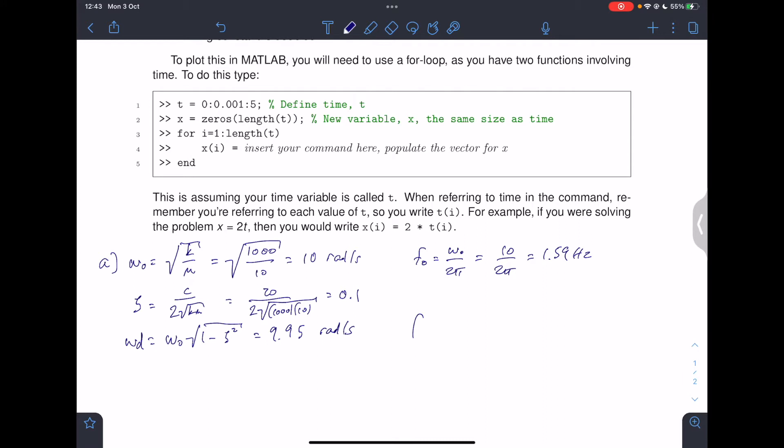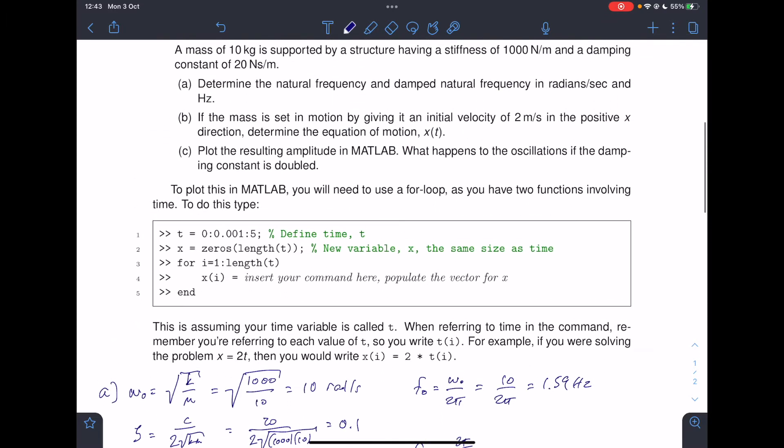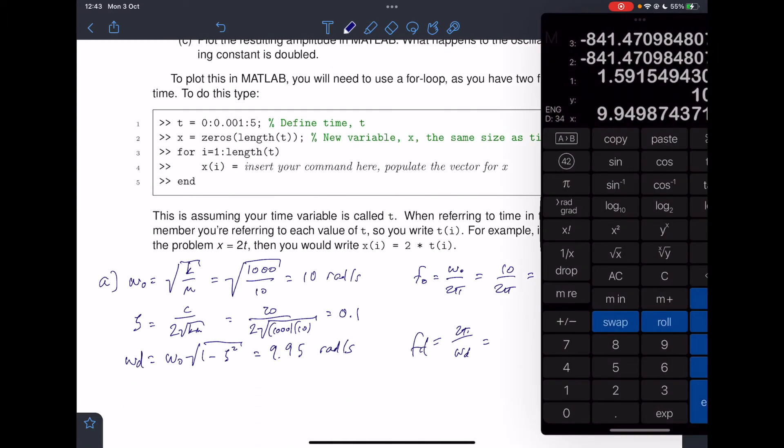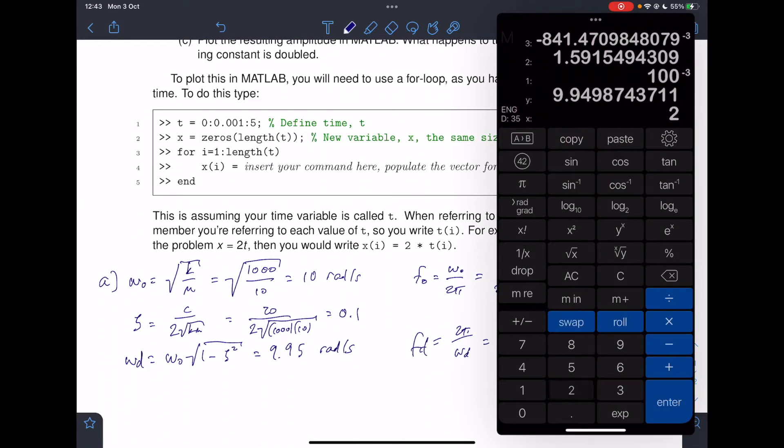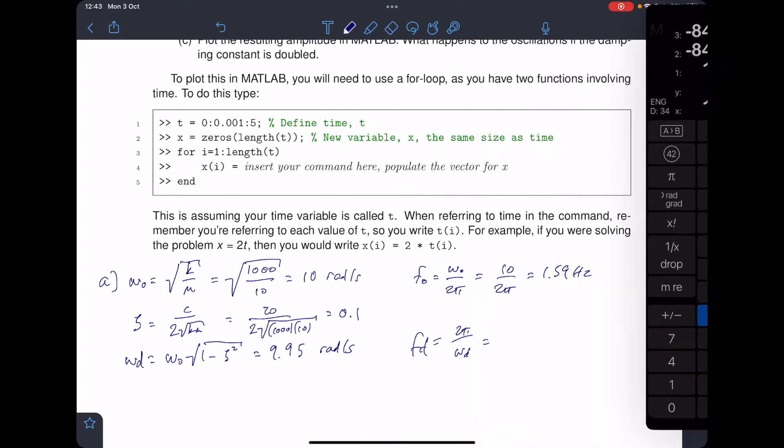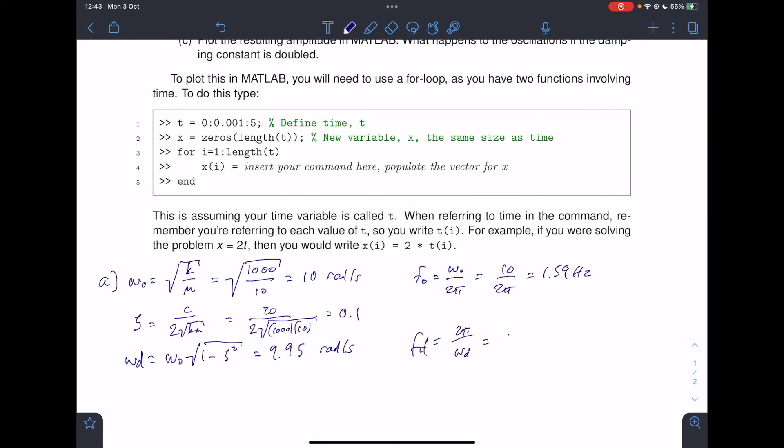And then obviously Fd is going to be omega d divided by 2 pi. So those are the solutions to part A.